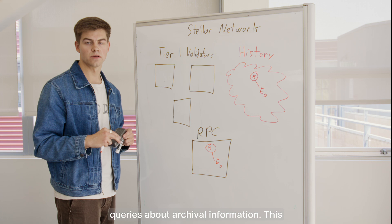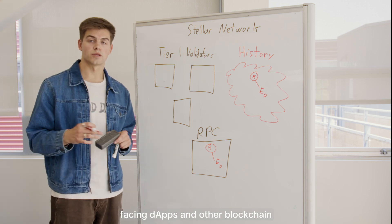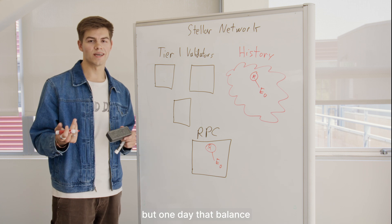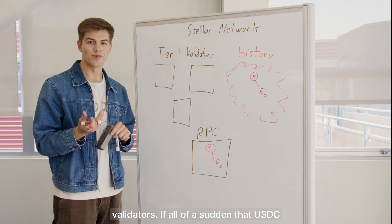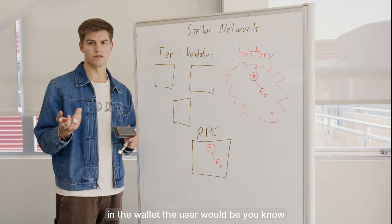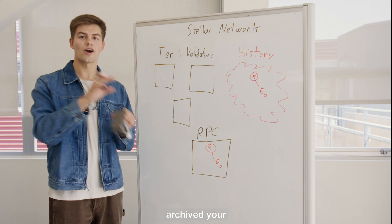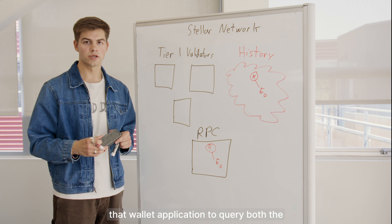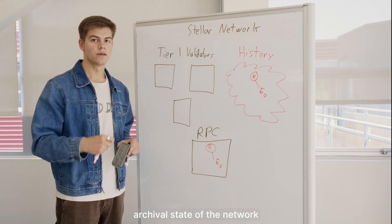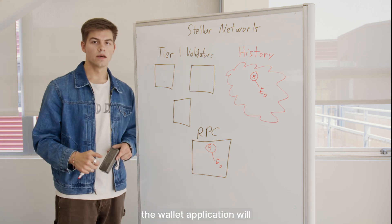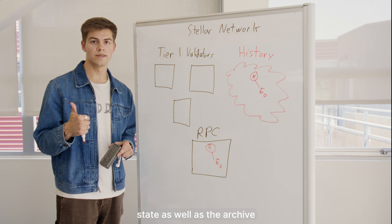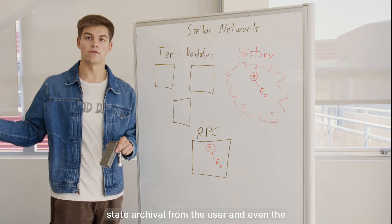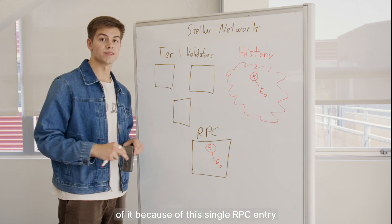This goes beyond just transaction submission. Because the RPC nodes have a local copy of the archival Merkle tree, in addition to simulating transactions, they can also execute queries about archival information. This is important for user-facing dApps and other blockchain applications. Imagine you have a wallet application that shows a user their current balance — say a 10,000 USDC balance — but one day that balance is archived and is deleted from the validators. If that USDC balance suddenly showed as zero in the wallet, the user would be understandably upset. What the RPC endpoint allows you to do is let that wallet application query both the live state as well as the archival state of the network at any given point, all in a single API call.